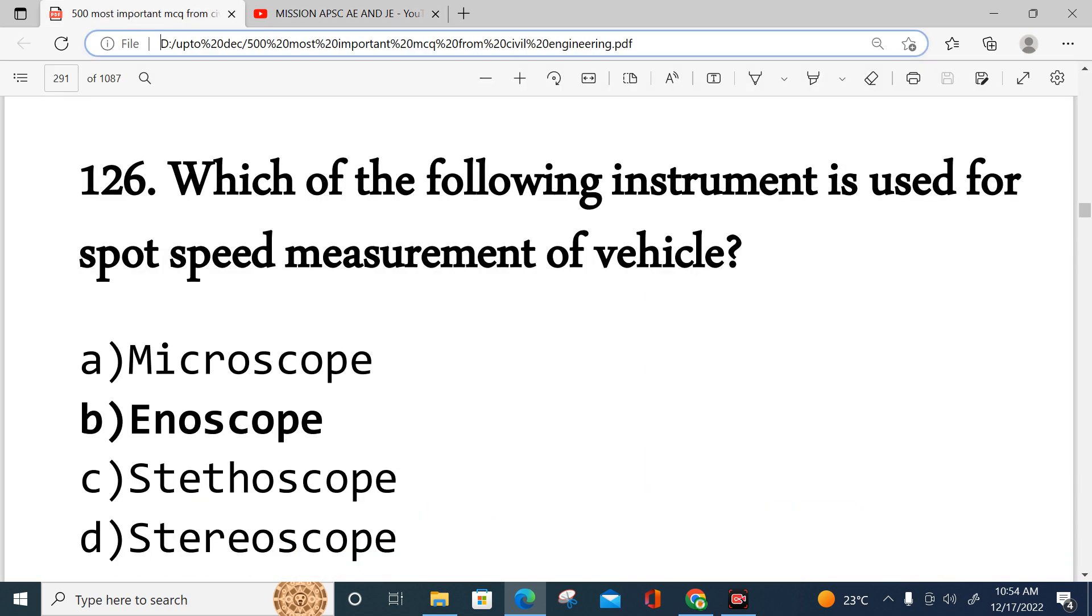Coming to today's class, we will discuss mainly 126 parts of the MCQ. First one, which of the following instrument is used for spot speed measurement of vehicles? For transportation engineering, spot speed measurement is done using instruments like radar gun and sensors. This is about spot speed measurement.